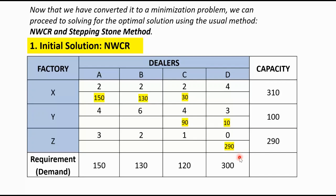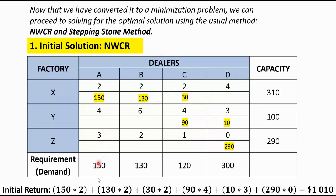Now we determine the total cost of this initial solution. We calculate: 150 times 2, plus 130 times 2, plus 30 times 2, plus 90 times 4, plus 10 times 3, plus 290 times 0, which equals $1,010. That is the initial return for this particular solution.